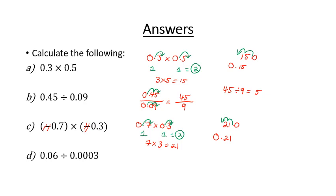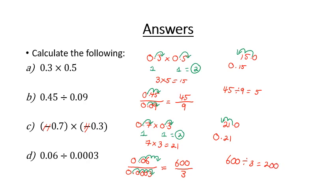In our last question we've got 0.06 divided by 0.0003. Written as a fraction, we need to move the decimal place the same amount on the numerator and denominator to get whole numbers. The denominator requires moving four spots, so we must also move the numerator four spots, which gives us 600 divided by 3. 600 divided by 3 gives us an answer of 200.